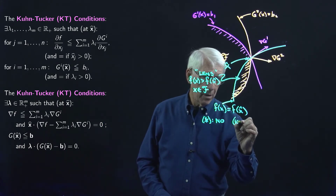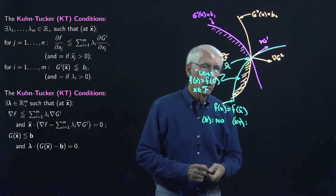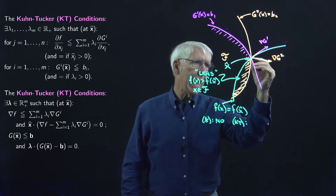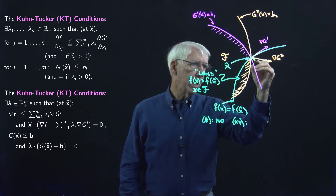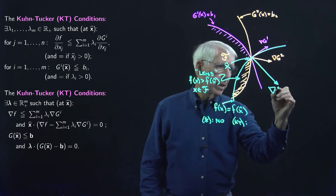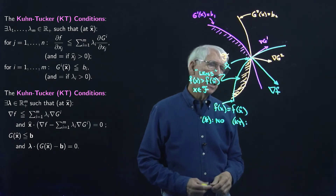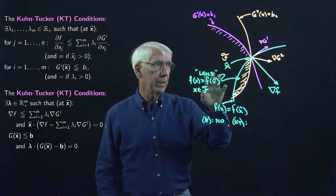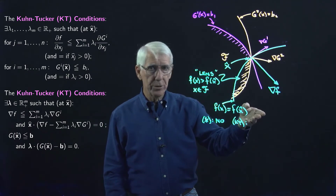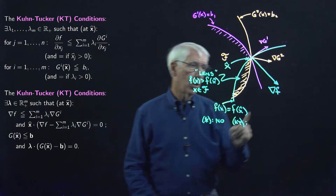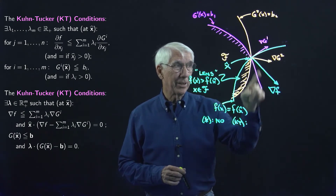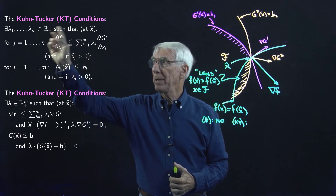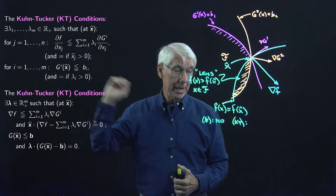Let's check the Kuhn-Tucker conditions and see if they're satisfied. The gradient of the objective function at X hat is orthogonal to the level curve. The gradient of F is clearly a linear combination of the two constraint gradients, because they're linearly independent and we're in R2 — every vector in R2 is a unique linear combination of these two vectors. But this has to be a non-negative linear combination in order for the Kuhn-Tucker conditions to be satisfied. The lambdas have to all be non-negative.